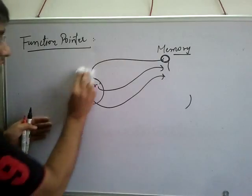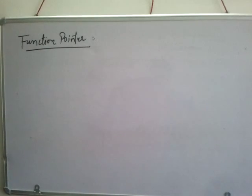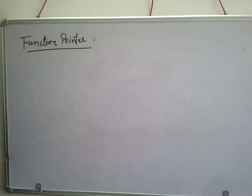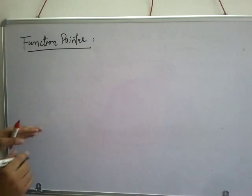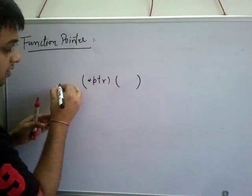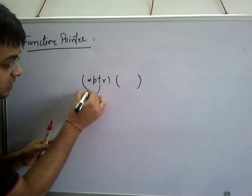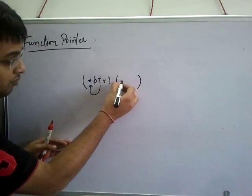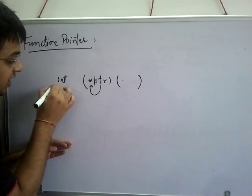A pointer which takes the address of a function is known as a function pointer. In the last lecture when we discussed how to read complex pointers, I taught you how to create a pointer to a function. How are we reading this complex pointer? ptr is a pointer to a function whose argument is void and return type is integer.